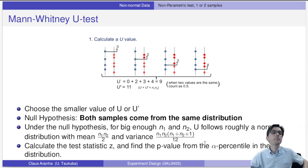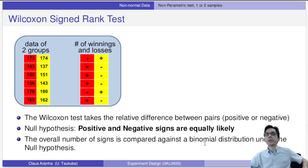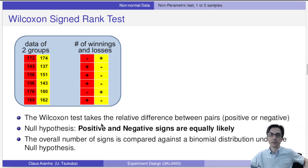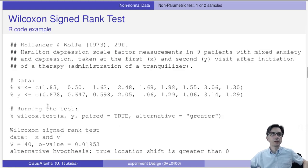The Wilcoxon signed-rank test is used for two paired samples. For each pair, we count wins and losses between the two groups. The test takes the relative difference between pairs — positive and negative. The null hypothesis is that positive and negative signs are equally likely. If they come from the same distribution, we expect equal numbers of positive and negative differences. We compare the signs against the binomial distribution under the null hypothesis. We can use the wilcox.test() function in R to perform this test.